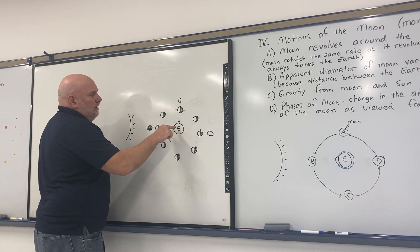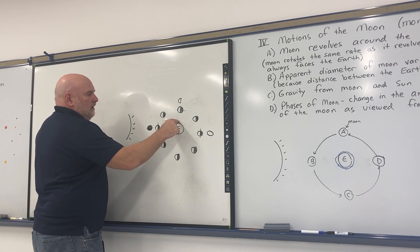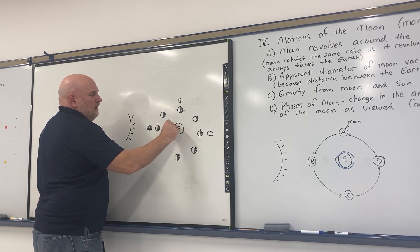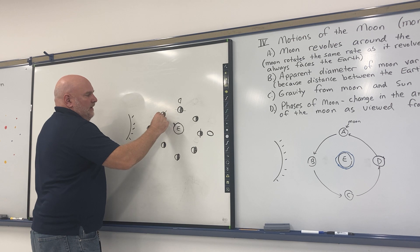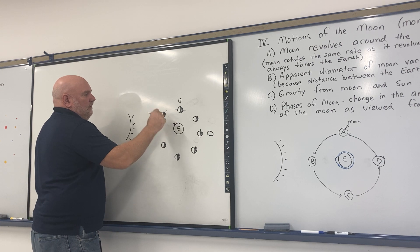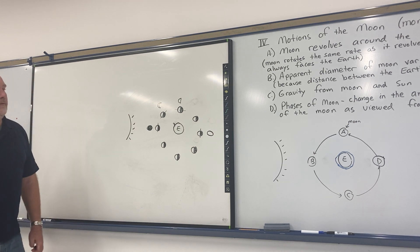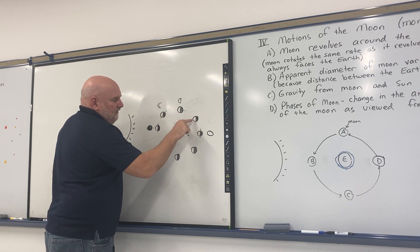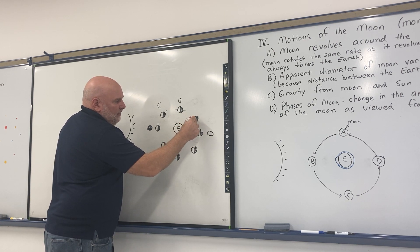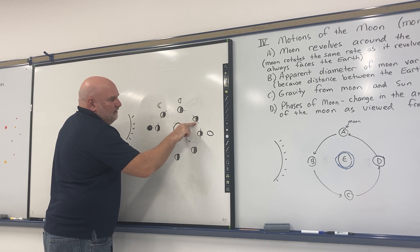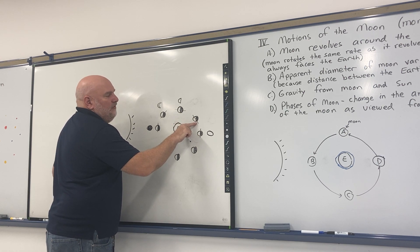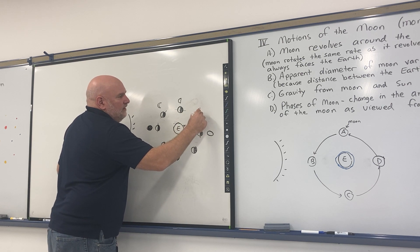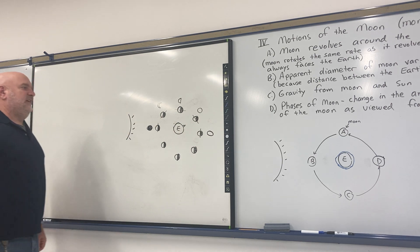Over here in another position, when I look at the moon, I'm going to see mostly dark on the right with a sliver of light on the left — so that would be a crescent moon. In another position, I look up and it's going to be a sliver of dark on the right with mostly light on the left — so it's going to look mostly bright with a dark edge, which is a gibbous moon.